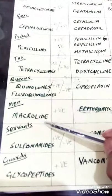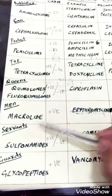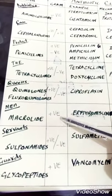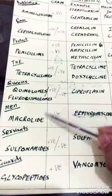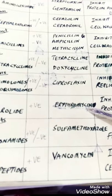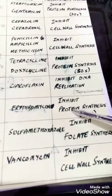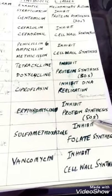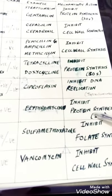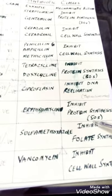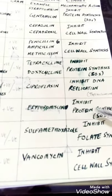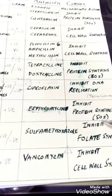The sixth class is macrolides, which specifically act on gram-positive bacteria — those with a large cell wall. An example is erythromycin. Macrolides inhibit protein synthesis, but on the 50S subunit — the upper subunit — which is different from aminoglycosides and tetracyclines that act on the 30S subunit.